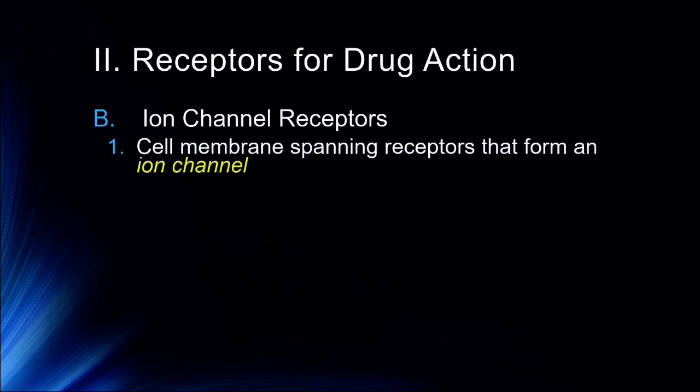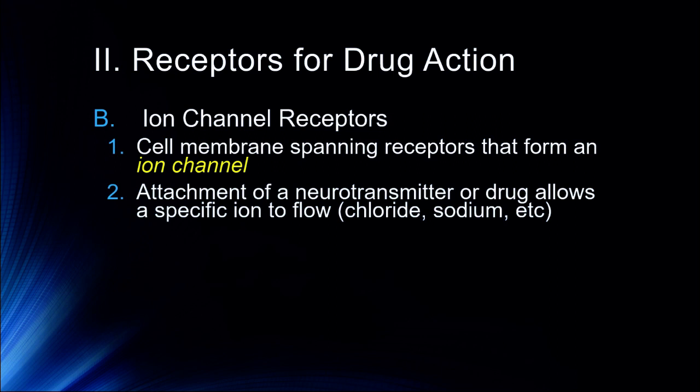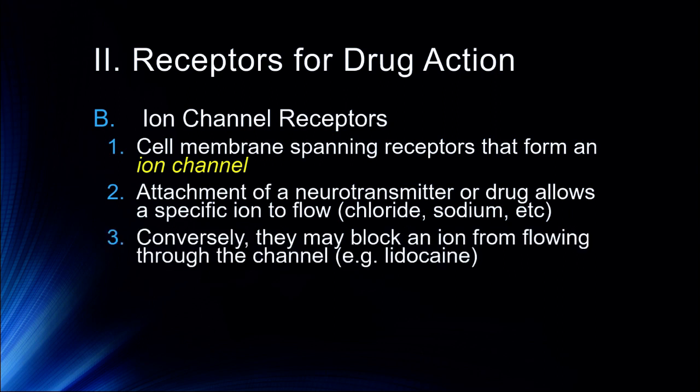Ion channel receptors are those that act particularly quickly. These are cell membrane-spanning receptors that form an ion channel. Attachment of a neurotransmitter or drug causes a specific ion to flow or not flow through that channel. When GABA binds, for example, it allows more chloride to cross the membrane, hyperpolarizing the cell and making it less likely to initiate an action potential. Drugs like lidocaine or novocaine actually block the sodium channel and prevent an action potential from being generated altogether.